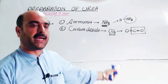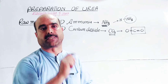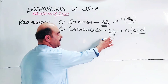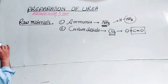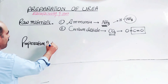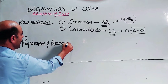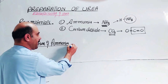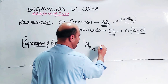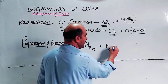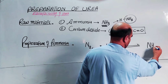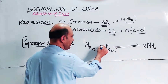In the industry, ammonia and carbon dioxide are combined in the reaction for the preparation of urea. These two raw materials can also be prepared within the same industry. The preparation of ammonia involves nitrogen gas and hydrogen gas in a reversible reaction, balanced as: N₂ + 3H₂ ⇌ 2NH₃.